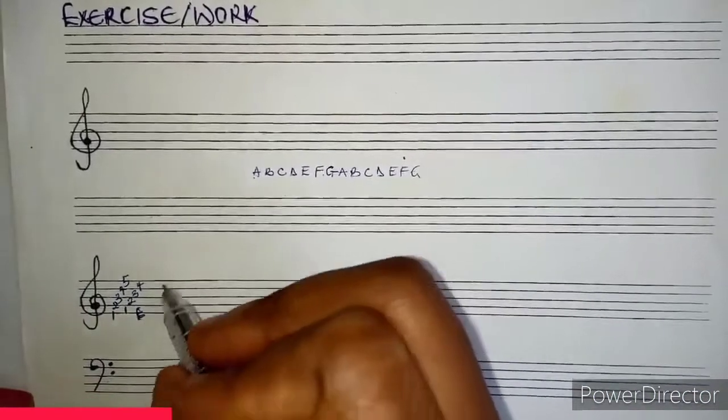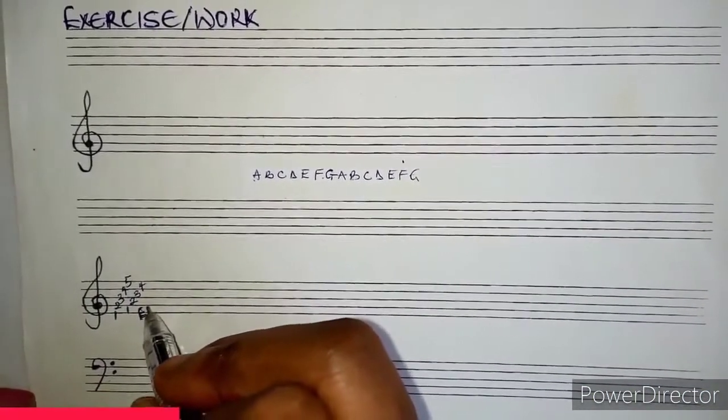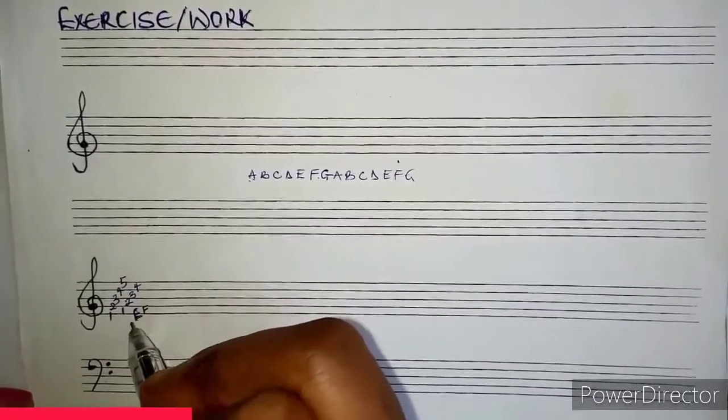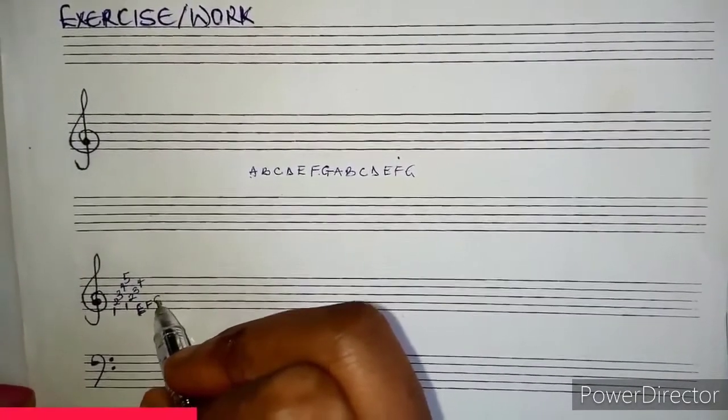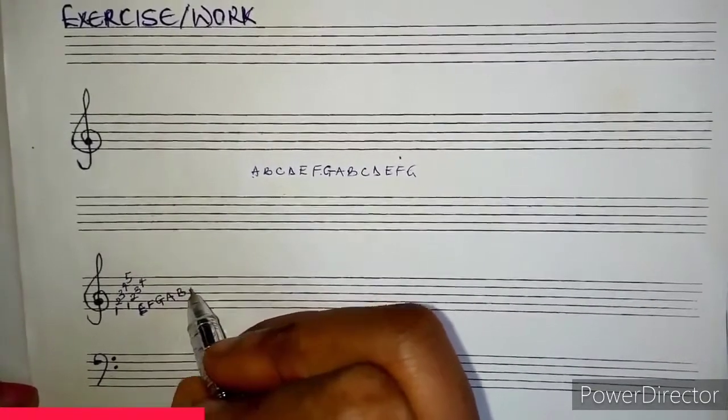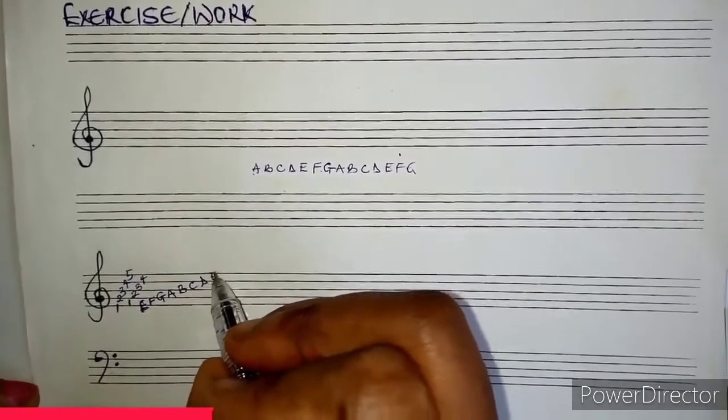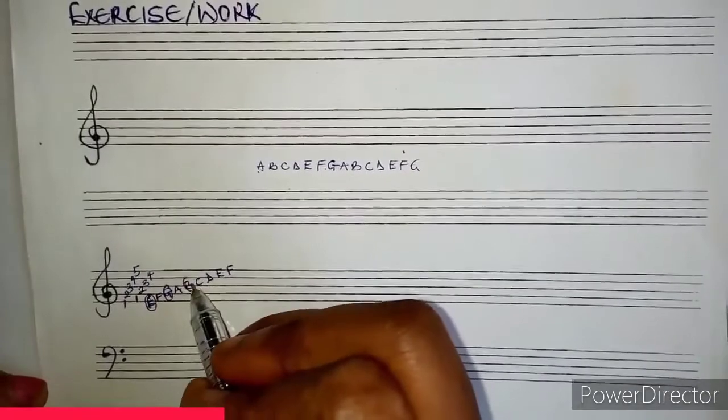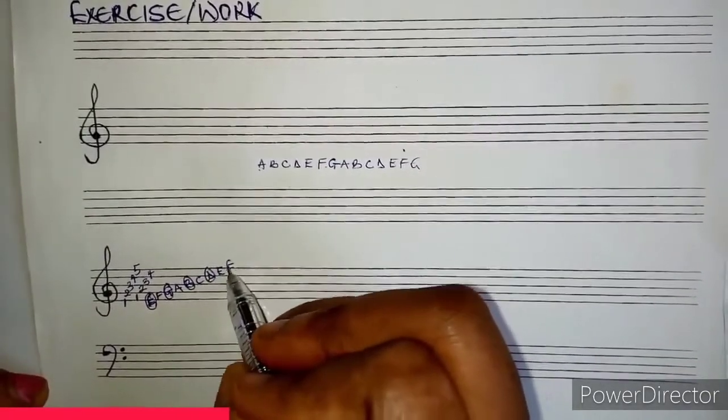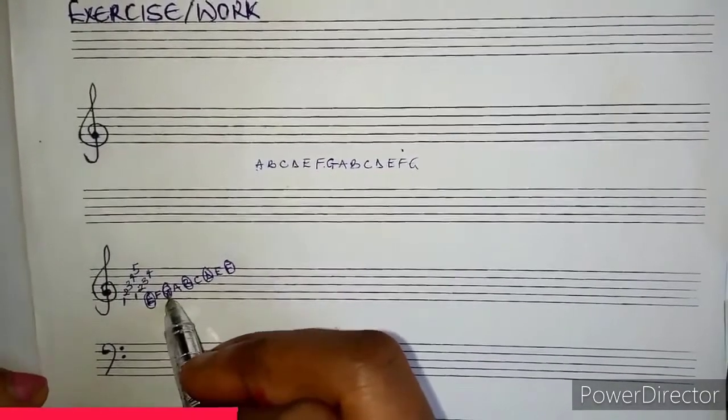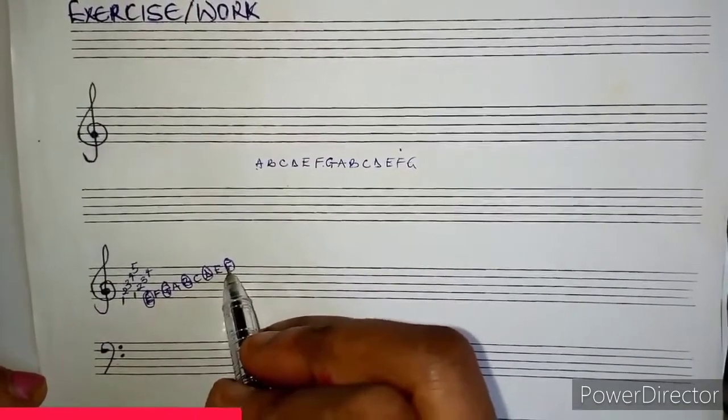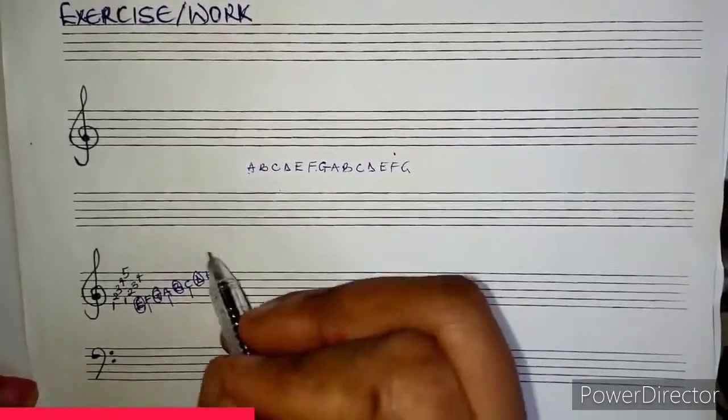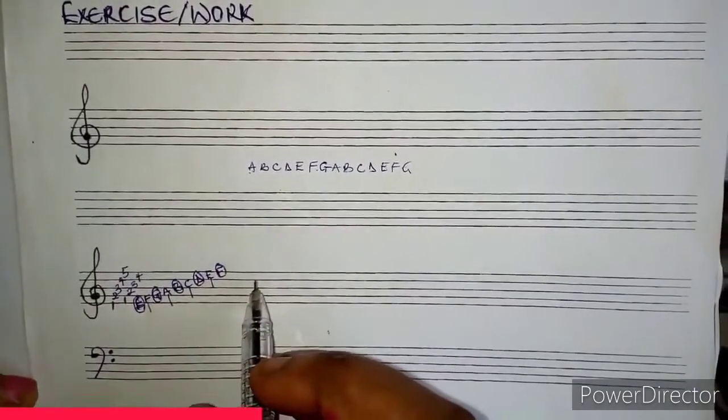We want to build our lines and spaces. If this is E, the first space becomes F. Continue: E-F-G-A-B-C-D-E and F. Look at the lines: E-G-B-D and F. That's what we say stands for Every Good Boy Drinks Fanta. And the spaces are F-A-C-E which is your word face.